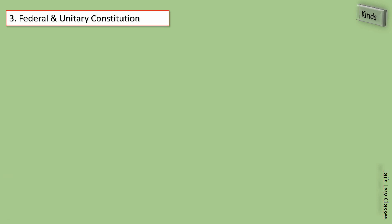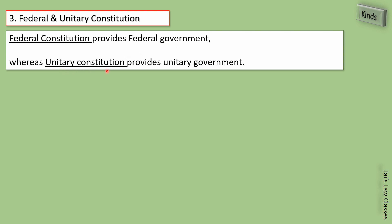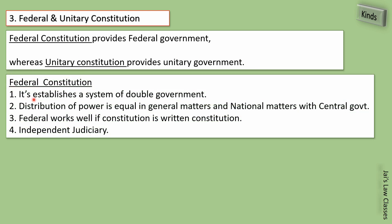Next: federal and unitary constitution. Federal constitution provides a federal government, whereas a unitary constitution provides a unitary government. Federal constitution enables a system to adopt a double government. Distribution of power is equal in general matters, and national matters remain with the central government. Additionally, there is an independent judiciary. This is what a federal constitution provides.